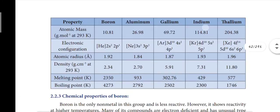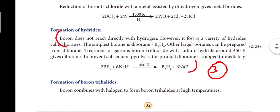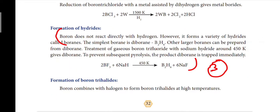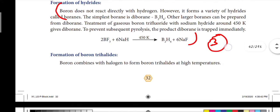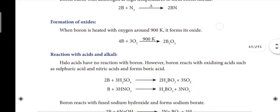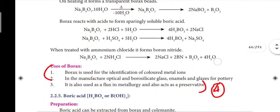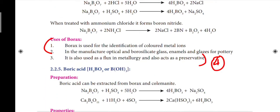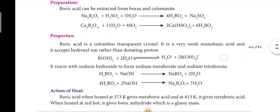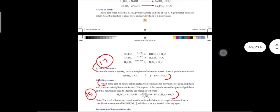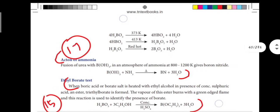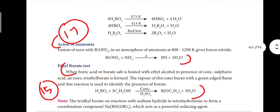Next, page number 32: how does boron form hydrides? The answer is in the paragraph — question number 3. Next, page number 34: uses of borax — the main points, fourth question. Next, page number 35: how boric acid is converted into boron nitrate by the action of ammonia — seventeenth question. Also fifteenth question on page 35.